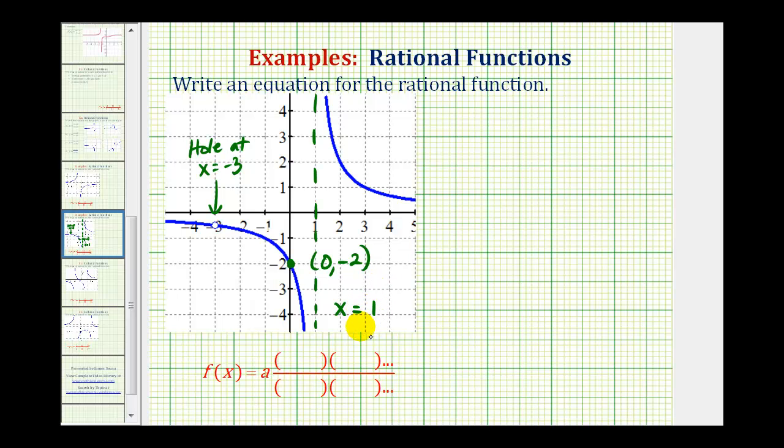This is enough information to determine our rational function. But we have to remember that knowing there's a hole at x equals negative three gives us information about a factor in the numerator and in the denominator. And knowing we have a vertical asymptote of x equals one gives us information about a factor in the denominator. Then we can use the y-intercept to determine the value of our constant a.